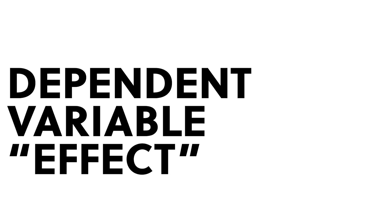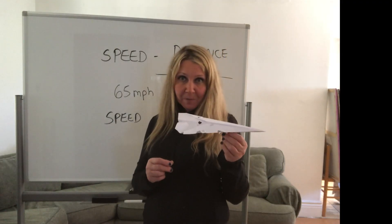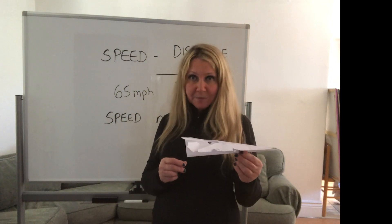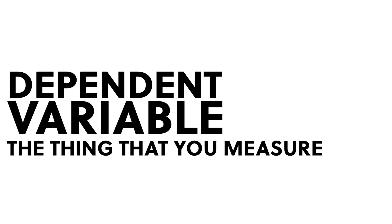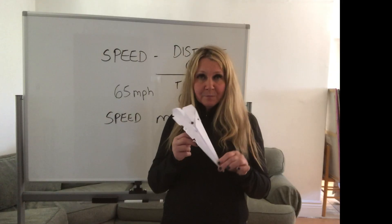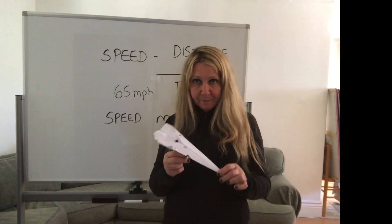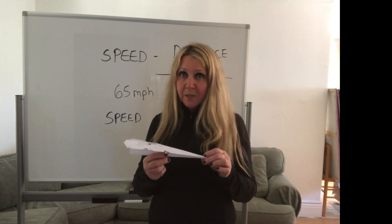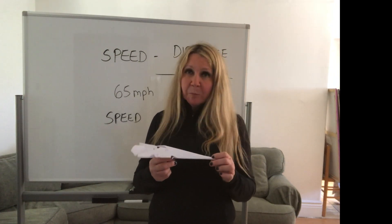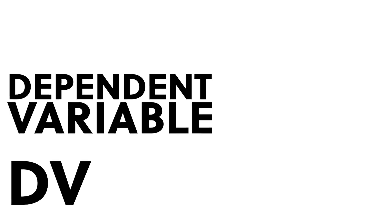The dependent variable is like the effect — it's what you measure. So what are we measuring in the end? We're measuring how far the planes travel. We're measuring the displacement, which is the name for how far it travels. So the displacement is going to be the dependent variable, abbreviated DV. Independent variable is like the cause; dependent variable is like the effect.